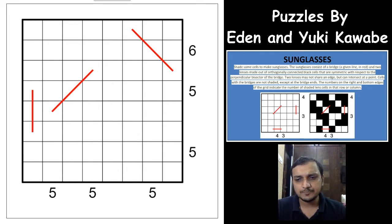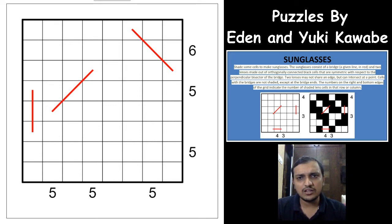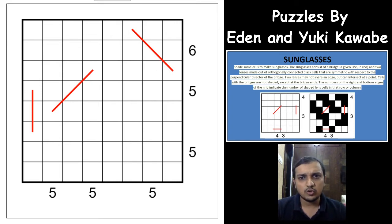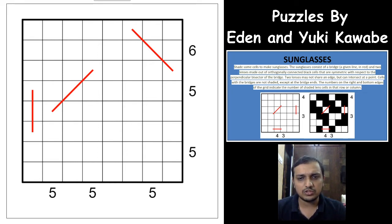Coming on to the puzzle — we need to shade some cells in the grid such that they form sunglasses. What is a sunglass? A sunglass consists of a bridge — the red line is the bridge — and then two lenses made out of orthogonally connected black cells. One end of the bridge is one lens and the other end of the bridge is the other lens.